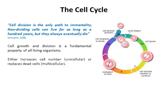Cell growth and division is a fundamental property of all living organisms. There are two consequences of cell growth: you either increase cell number — in the case of unicellular organisms like bacteria or yeast, cells divide to make two cells, one bacterium divides and then you have two — and that process generally continues driven by the availability of nutrients. It's a little more complex in multicellular organisms.